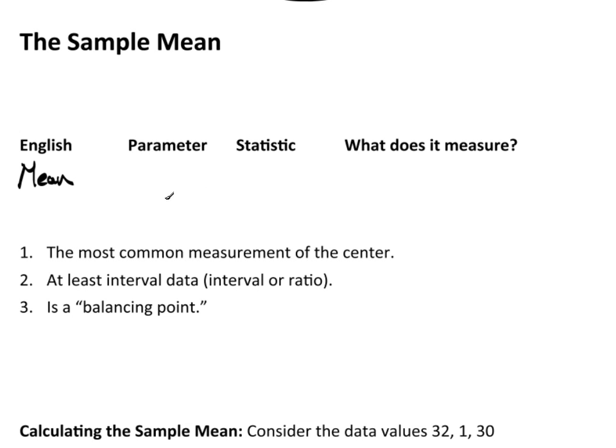The parameter, the symbol for the parameter, we use a Greek letter mu—it's like a u with a long leading tail. The statistic is X bar. I used X bar because that's suggesting that the variable is X.